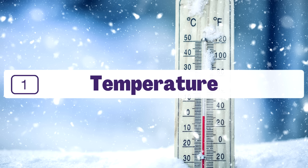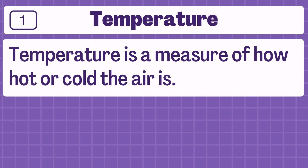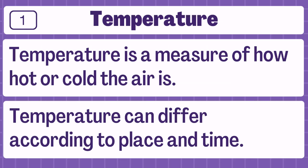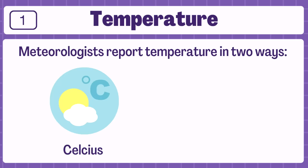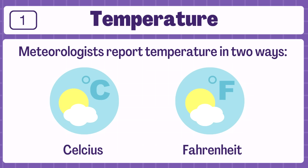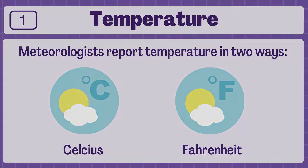Number one: temperature. Temperature is a measure of how hot or cold the air is. Temperature can differ according to place and time. Meteorologists report temperature in two ways — in Celsius and Fahrenheit. The United States uses the Fahrenheit system, but in other parts of the world, like in the Philippines, Celsius is used.